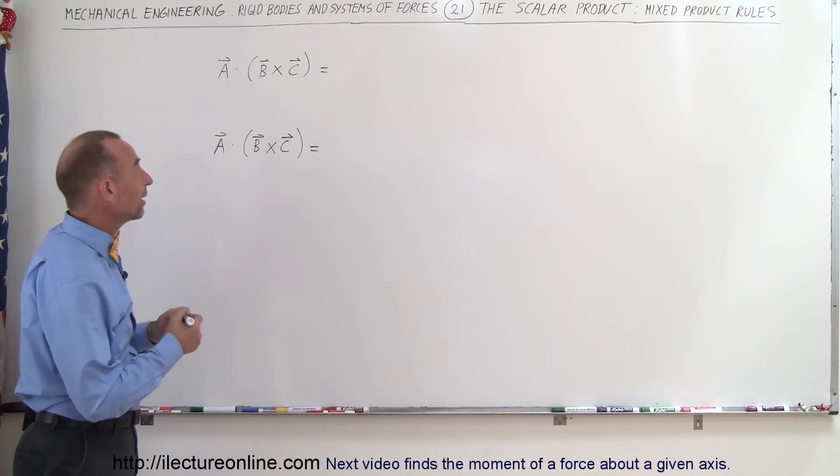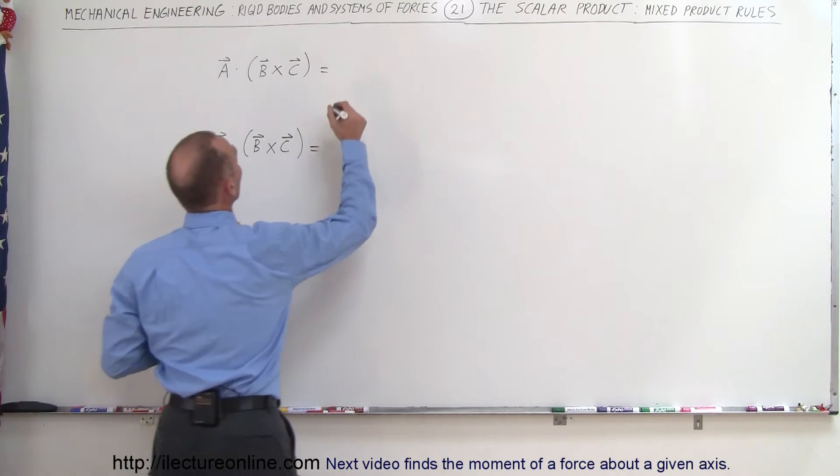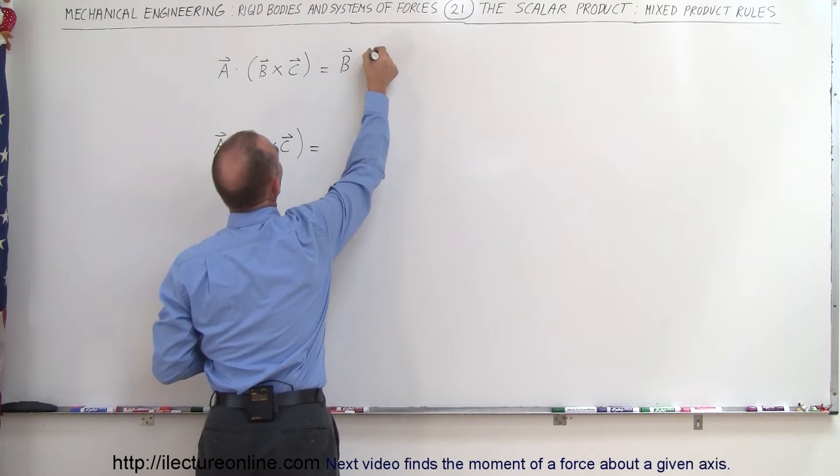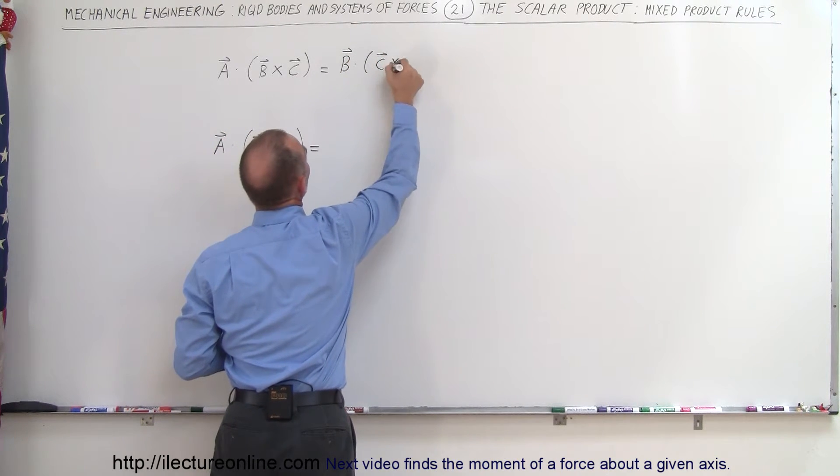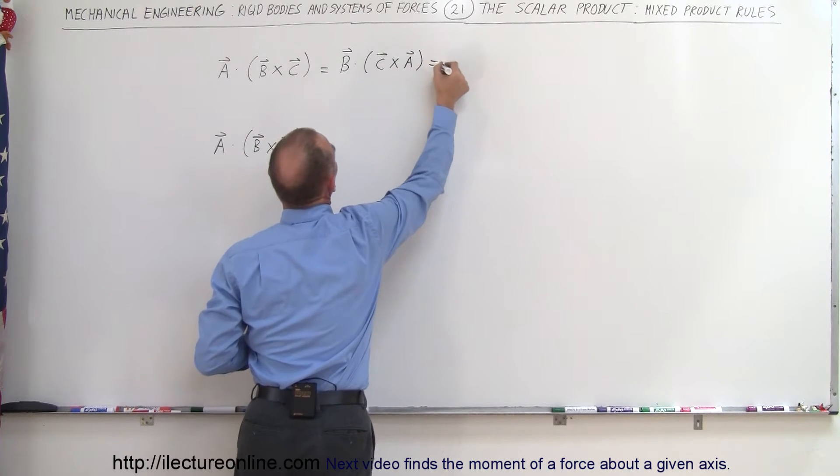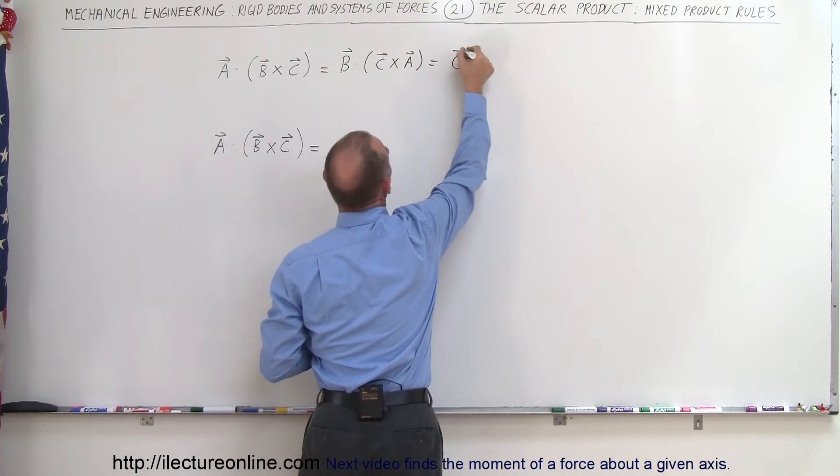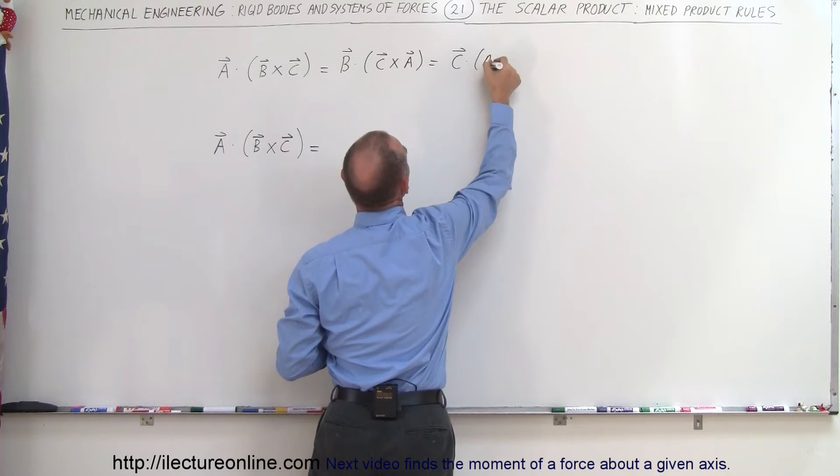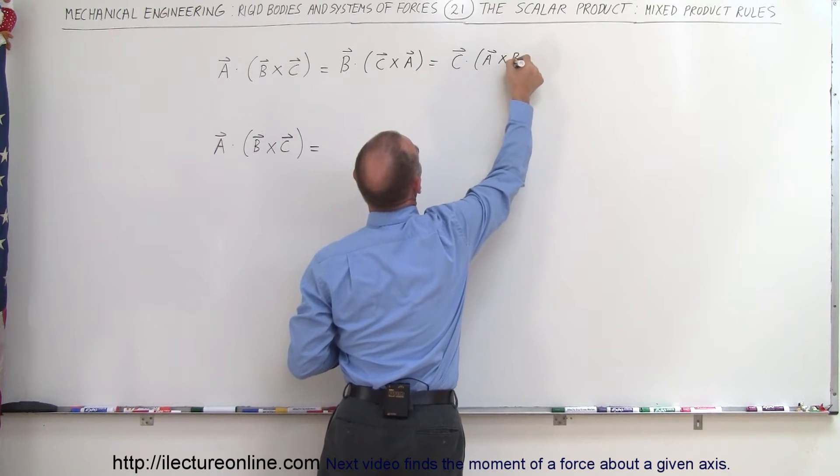It turns out there's some very interesting rule that this is equal to the scalar product of B dot C cross A and this is also equal to the scalar product of C times A cross B.